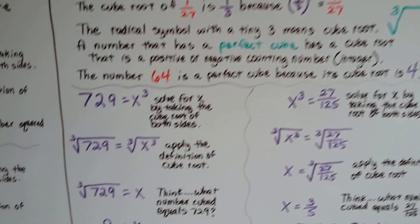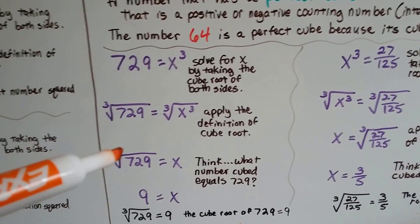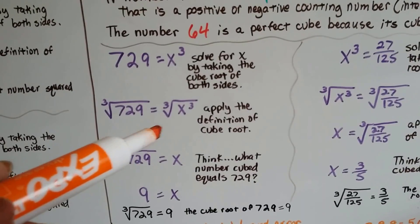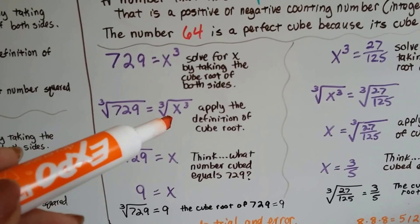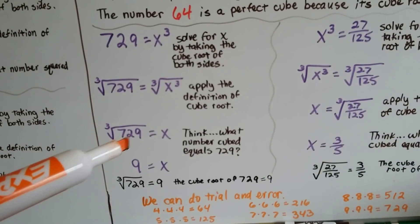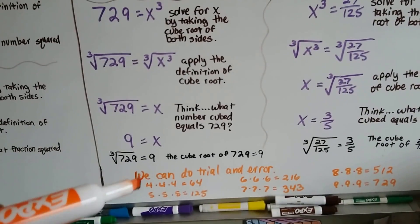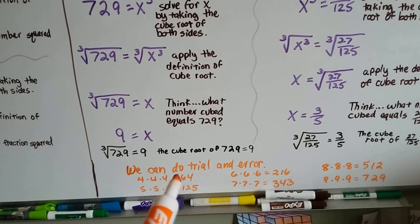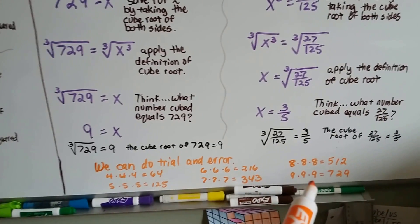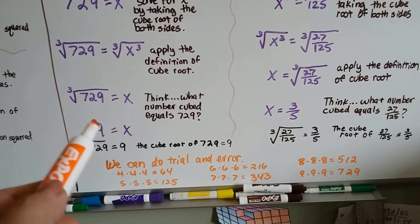It's perfect. So if we had to find the cube root of 729, we would solve for x by taking the cube root of both sides. We apply the definition of a cube root — it's a number multiplied to itself 3 times that equals that number. We think, what number cubed equals 729? So we can do trial and error. 4 times 4 times 4 is 64 — well, that's not 729. We try to find a number that when multiplied to itself 3 times equals 729, and 9 fits. So x equals 9.